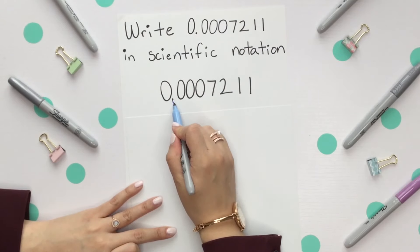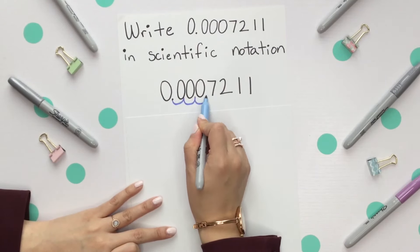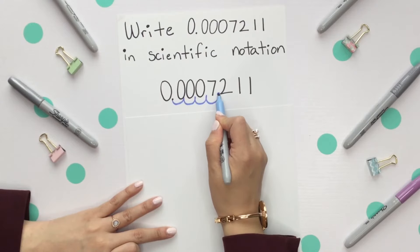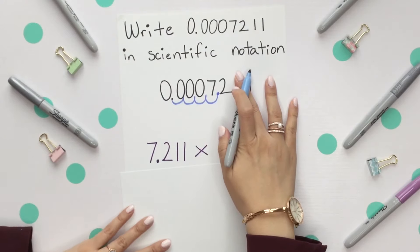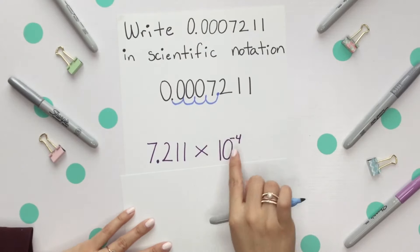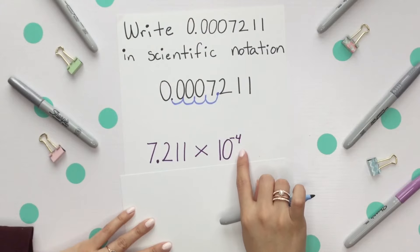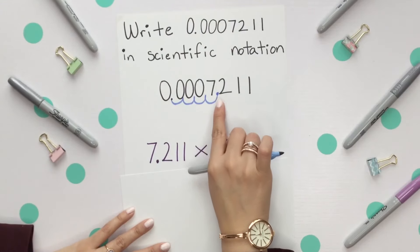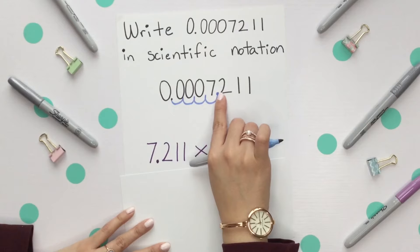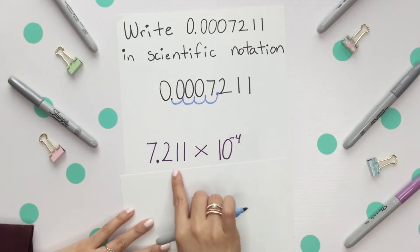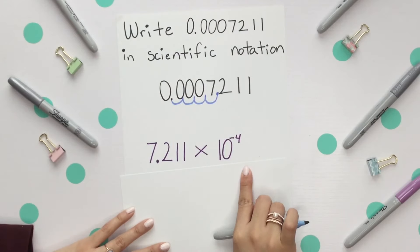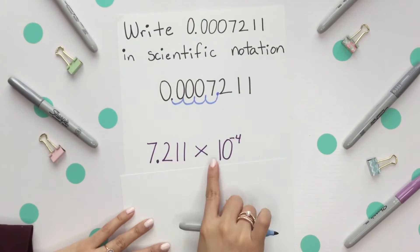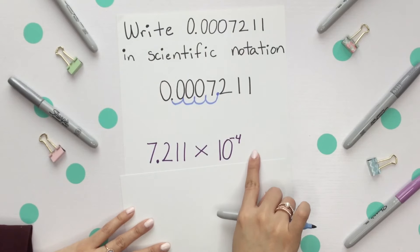Moving the decimal over 1, 2, 3, and 4 and placing our decimal place there, we know that we will have a negative 4 as our exponent because that's how many places we moved to get to that first non-zero number. So our proper scientific notation is 7.211 times 10 to the negative fourth.